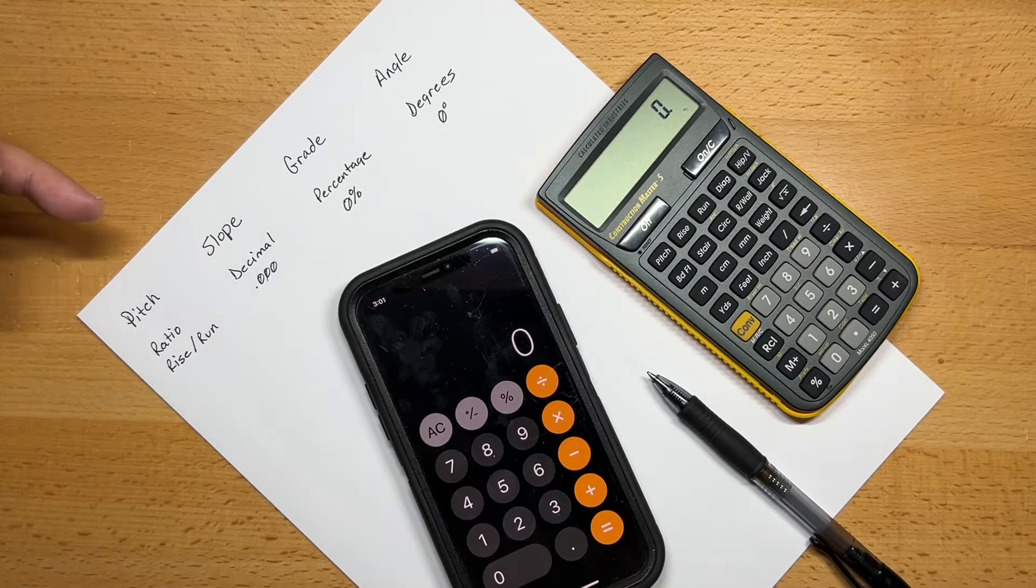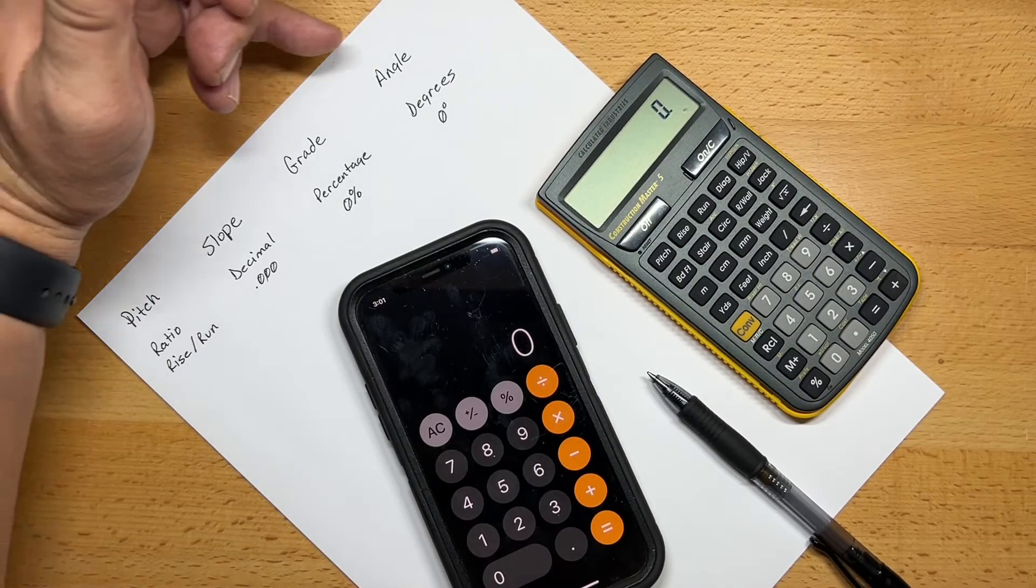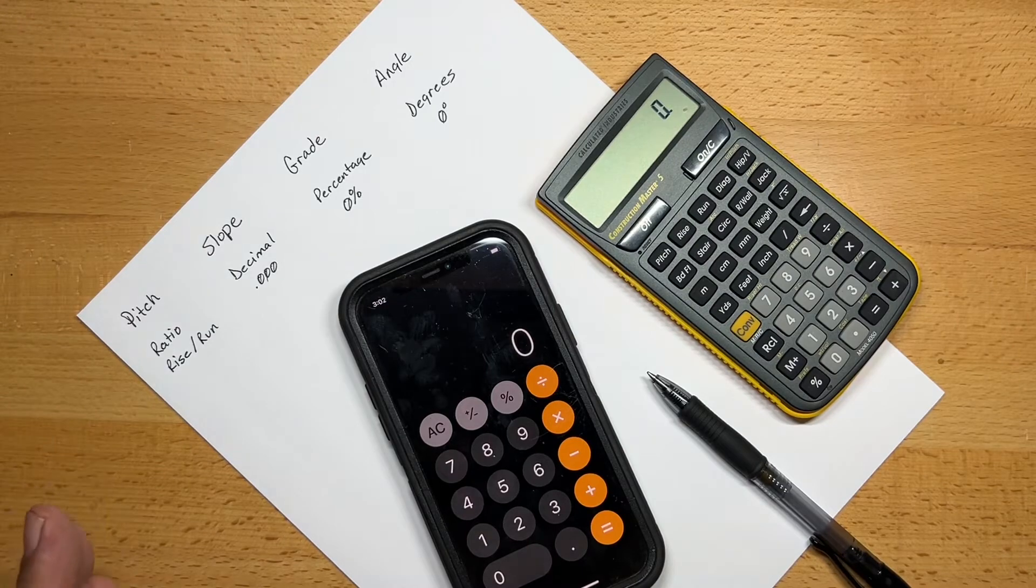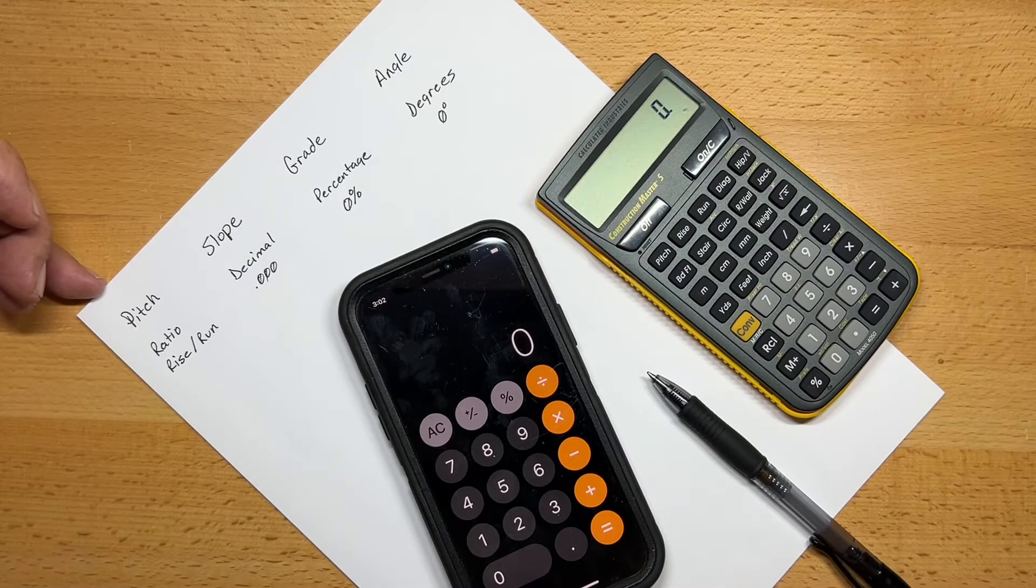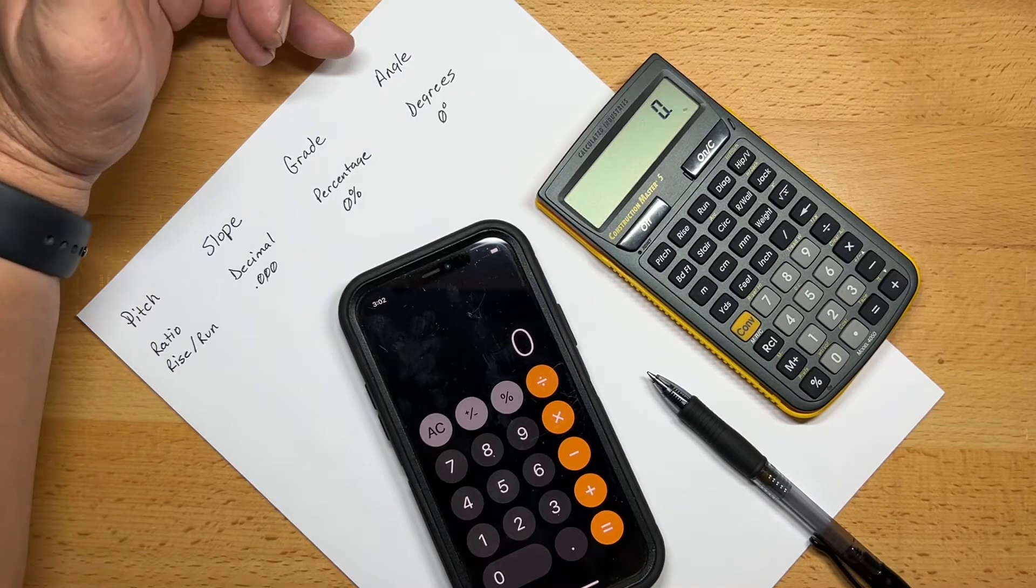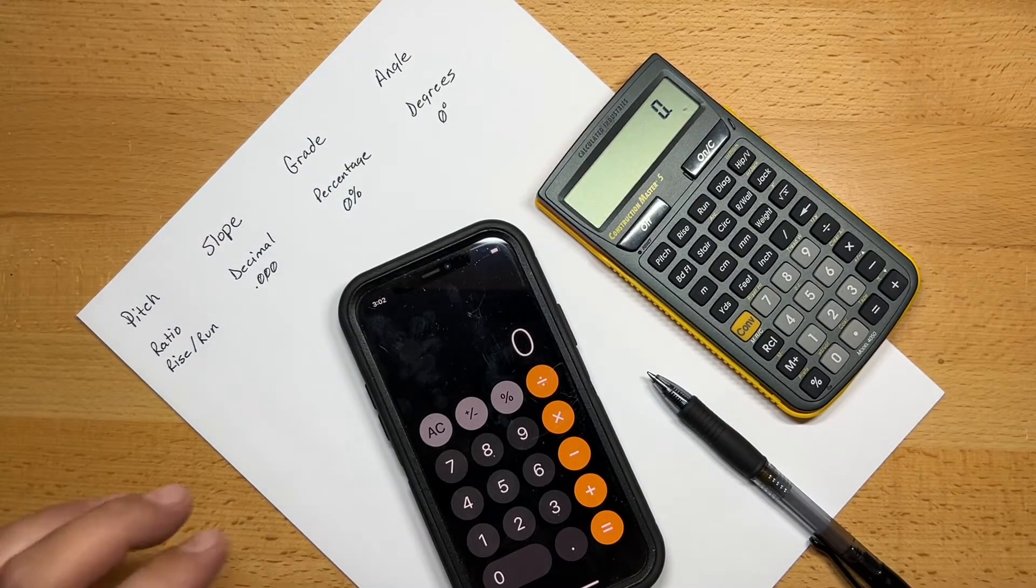Today we're going to be talking about pitch, slope, grade, and angle. I'll show you how they're related and then how to calculate between them. As an example, if you know the pitch on a particular roof, I'll show you how to get the exact angle for that particular pitch.